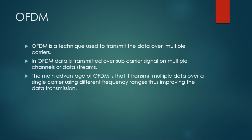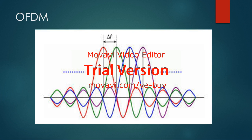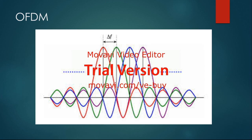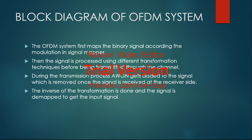OFDM is one of the most efficient techniques for transmission over the channel and it uses the bandwidth very efficiently. This image shows the transmission of data over the same channel using different frequency ranges, where the red, green, blue and purple waves are data being transmitted at different frequency ranges. Delta-F is the difference between the two frequencies, showing that the data can be transmitted without getting mixed up.